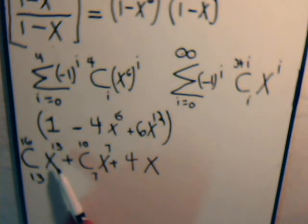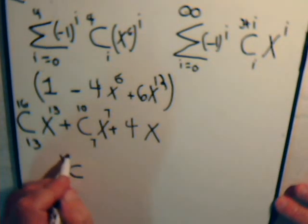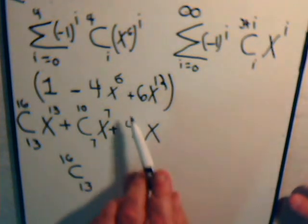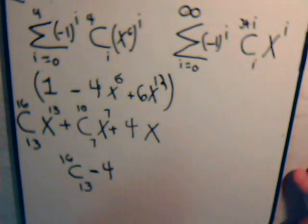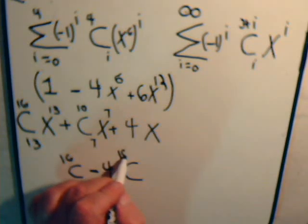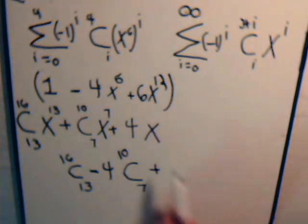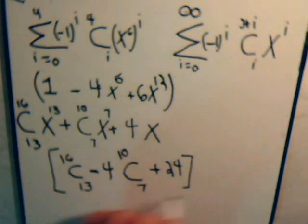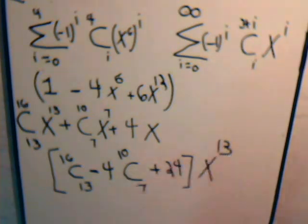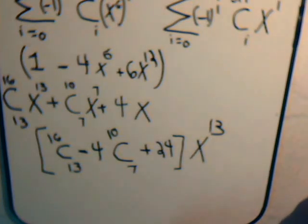It's this times this. And that just gives us simply C16, 13. Then this times this, so that's minus 4, C10, 7 plus this times this gives us x to the 13th. That is a coefficient of 24. So here then doing these manipulations will finally give us our coefficient of x to the 13th. So let's just make some room and hopefully in no time flat we'll have our answer.